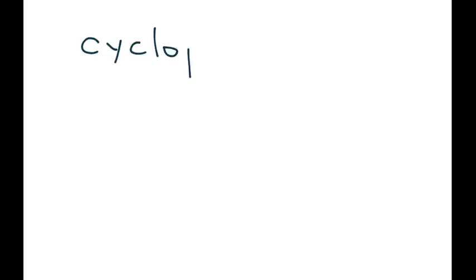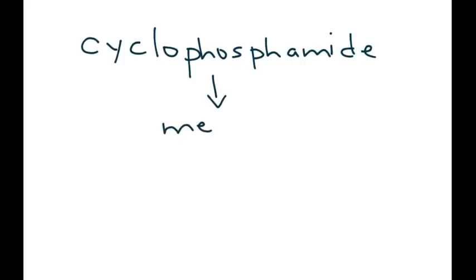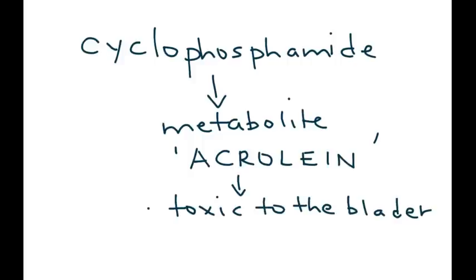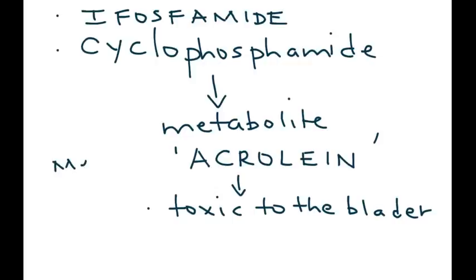Starting with cyclophosphamide — when a cancer patient is given cyclophosphamide to treat the cancer, when this drug breaks down it produces a metabolite called acrolein. This metabolite is toxic to the bladder. Acrolein can also arise from using the other nitrogen mustard, ifosfamide. What mesna does is, if you administer mesna along with the cancer drug, it can go and bind to acrolein and inactivate it.